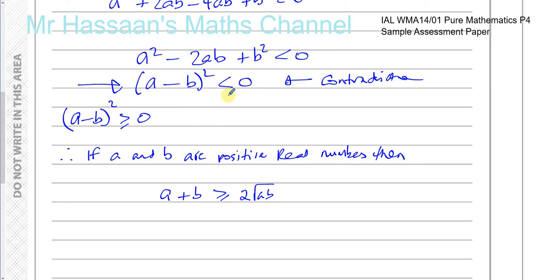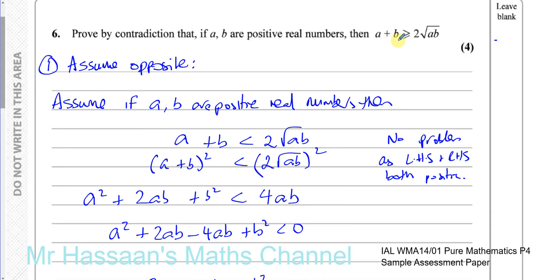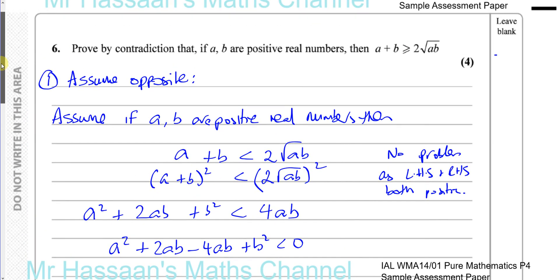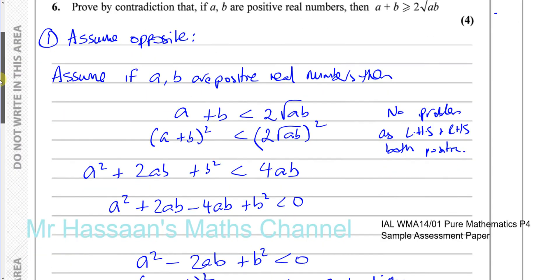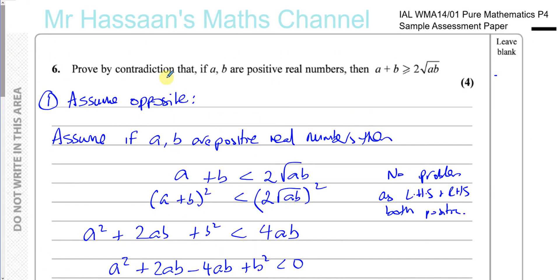There are other ways of proving this. If asked to prove A plus B is greater than or equal to two times the square root of AB, you could square both sides directly — without assuming the opposite — and show the statement is true, ending up with (A minus B) squared greater than or equal to zero, which is always true. But here we're learning proof by contradiction, not deduction or induction.